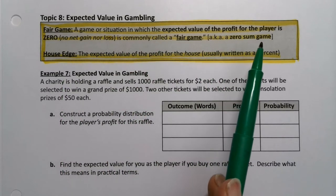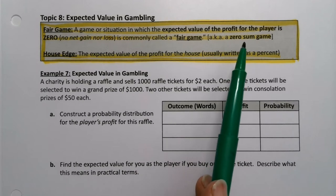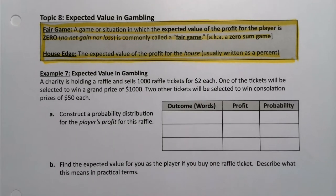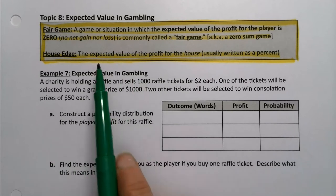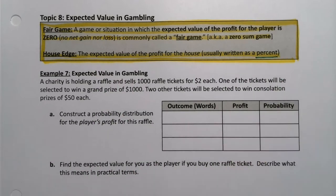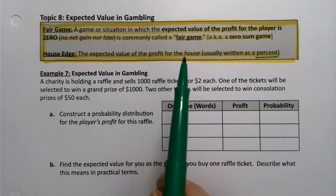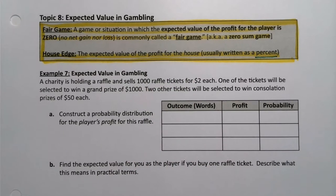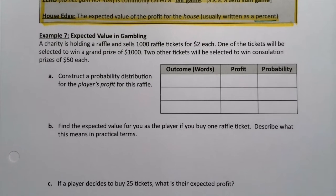So if you've heard of a zero-sum game, sum because of course the weighted mean, the expected value, has a sum inside that formula. And then the house edge, usually written as a percent but not always, is the expected value of profit for the house, for the person that's running the game. Let's see how this works in an example to try to clarify things.